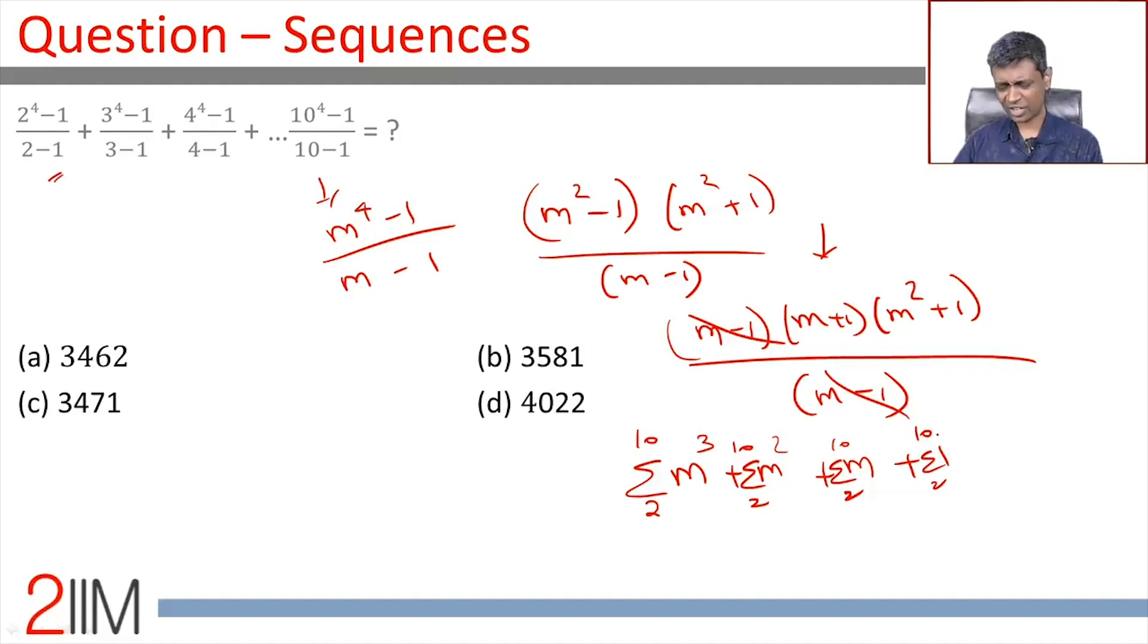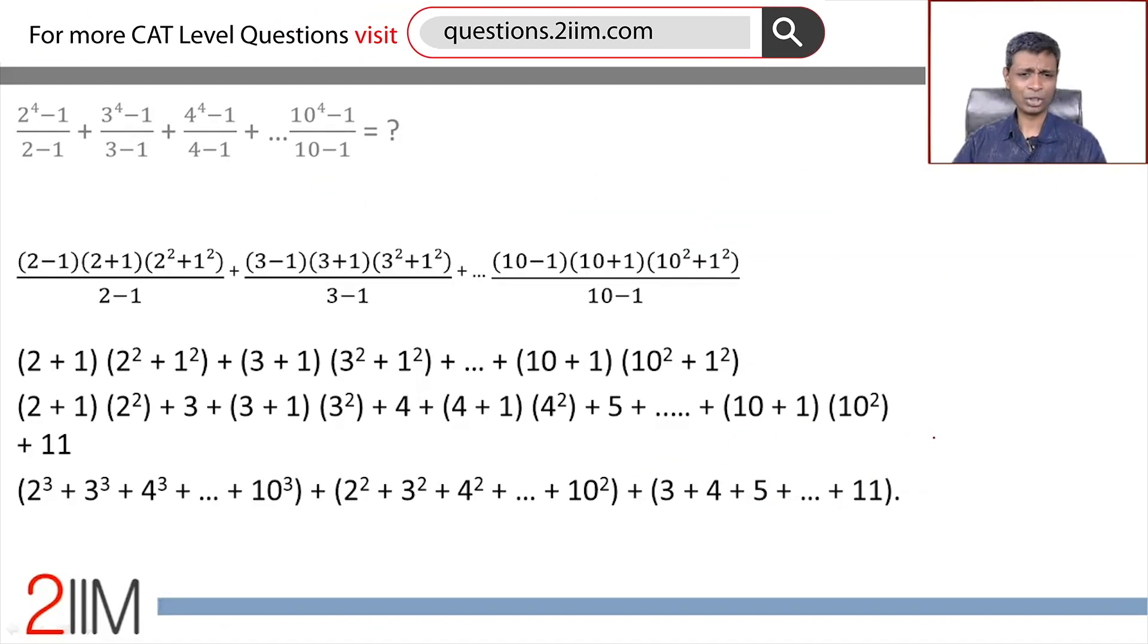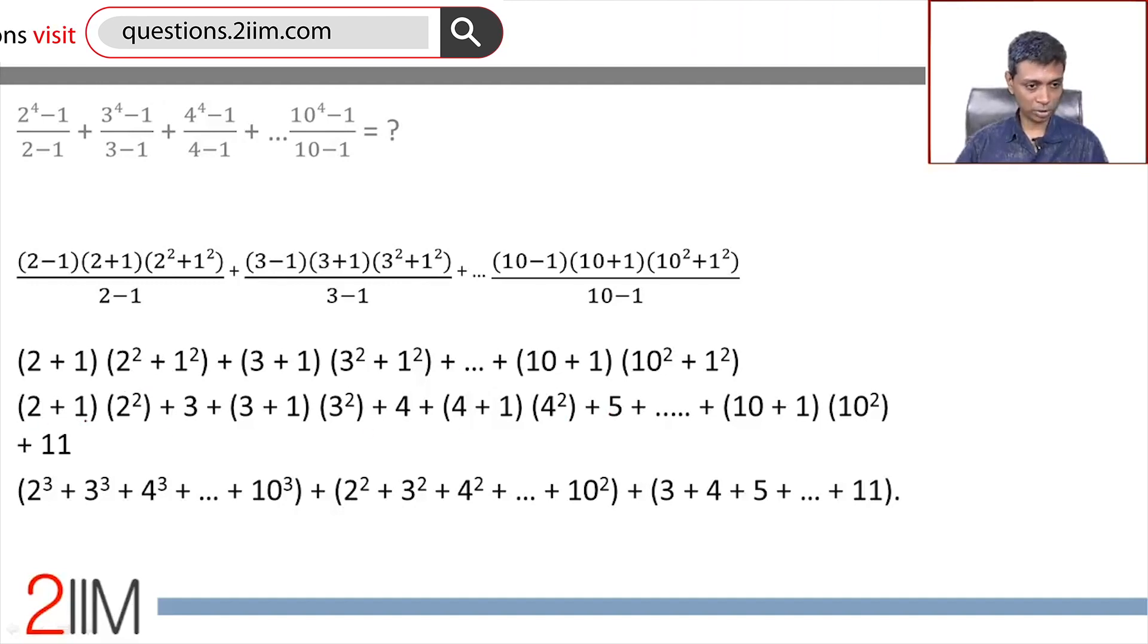If you count like this, doing it term by term: this is (2+1)(2^2+1), which is (2+1)(2^2) + 3, (3+1)(3^2) + 4, (4+1)(4^2) + 5, and so on. So this is 2^3 + 2^2 + 3^3 + 3^2 + 4^2...